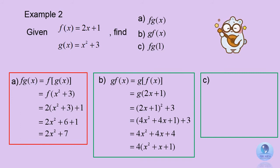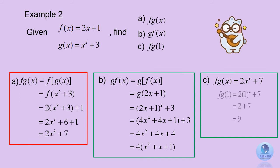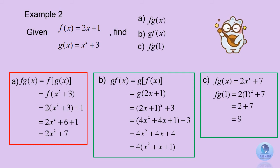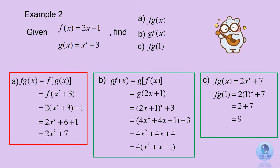Question C: find f of g of 1. Since you have already found that f of g of x equals 2x squared plus 7, you just need to substitute 1 into that function and you get the answer 9. Alternatively, you can use the step-by-step method: first solve g of 1, then substitute the answer into f of x. You should get the same answer, 9.